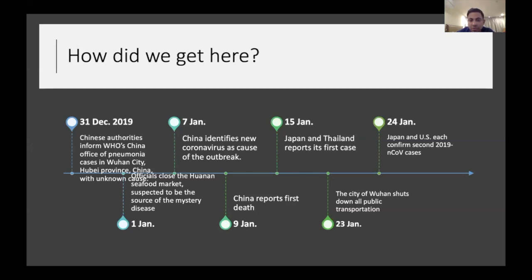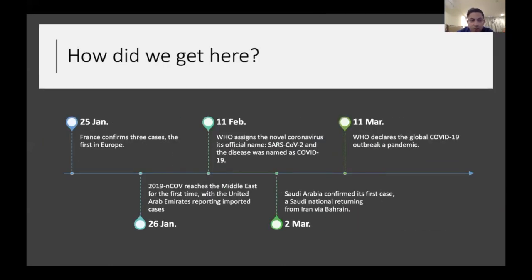By January 9th, China reported their first death. By January 15th, Japan and Thailand reported their first cases. On January 23rd, Wuhan shut down all public transportation. By January 24th, the infection reached Japan and the United States. By January 25th it reached Europe, by January 26th the Middle East. On February 11th, WHO assigned the official name SARS-CoV-2, and the disease was named COVID-19. By March 2nd it reached Saudi Arabia, and on March 11th WHO declared COVID-19 a pandemic.